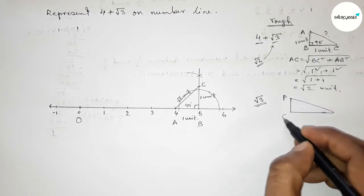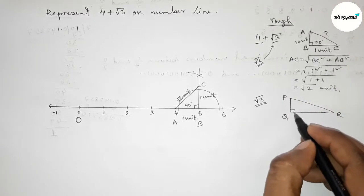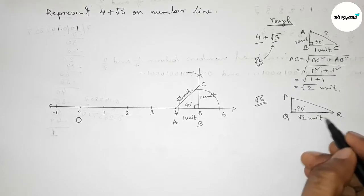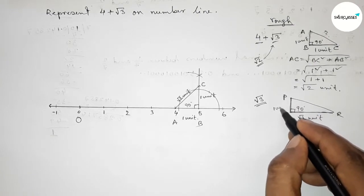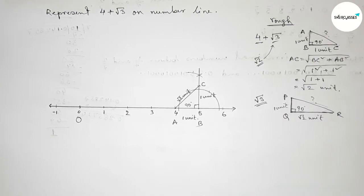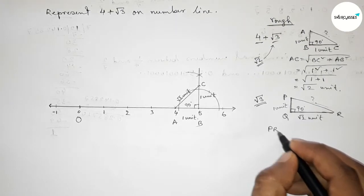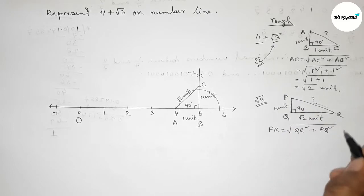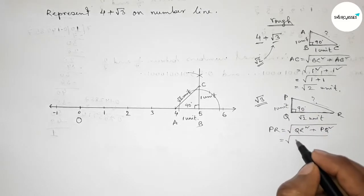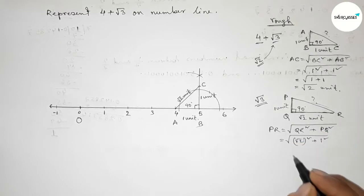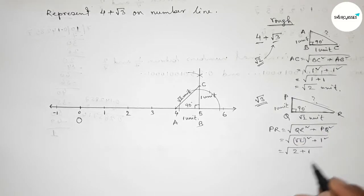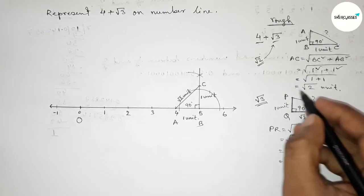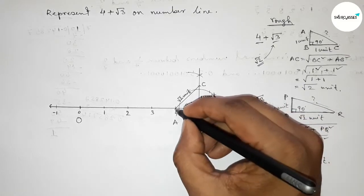Now we have to represent root 3 on the number line. Discussing a right angle triangle PQR — if we take the base QR equal to root 2 unit and the perpendicular PQ equal to 1 unit, then by Pythagoras theorem, PR equals root over (root 2 squared plus 1 squared), which is root of 2 plus 1, equal to root 3 unit length.